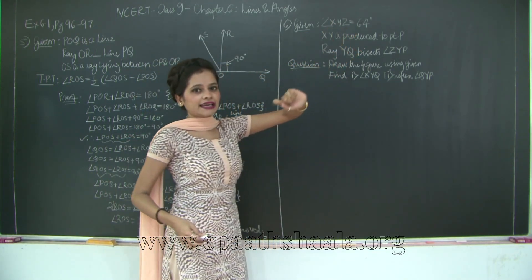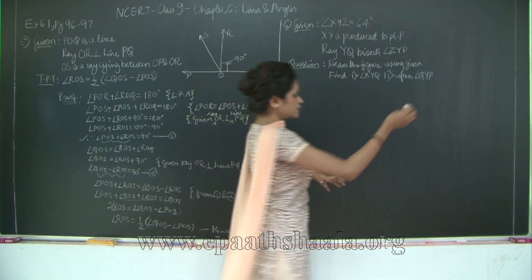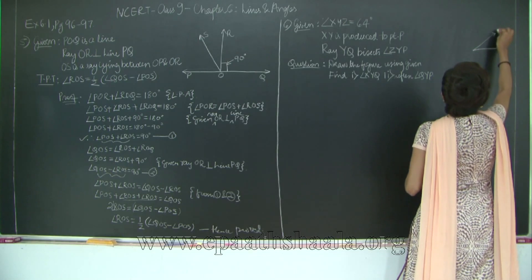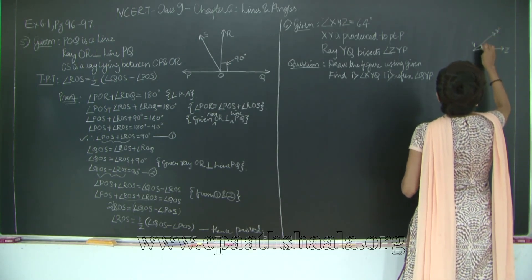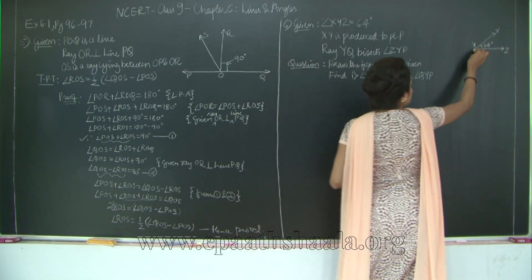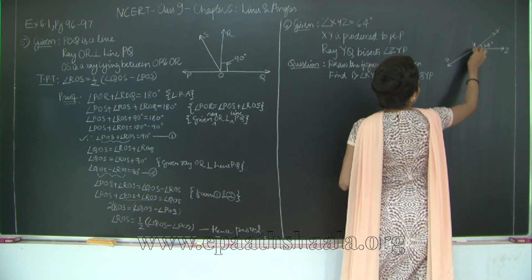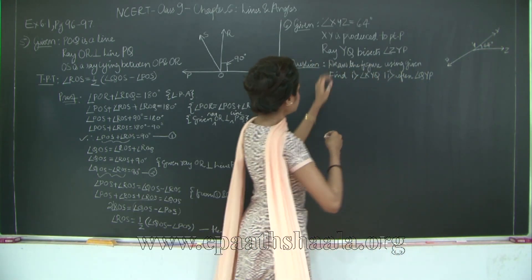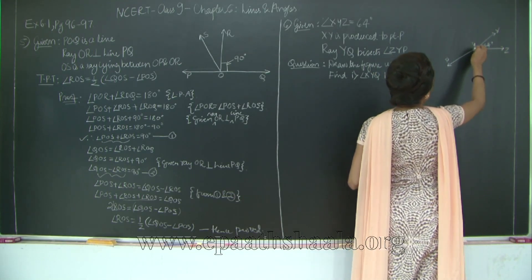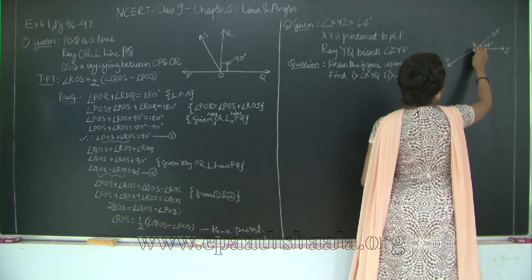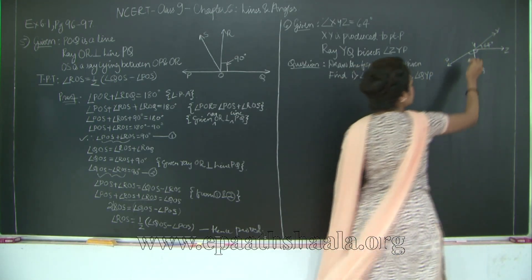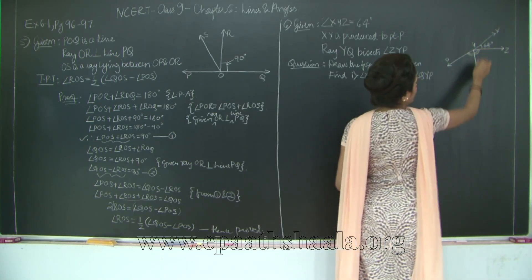First, we take the given data and draw the diagram. Angle XYZ is 64 degrees, which is an acute angle. Then XY is produced to point P, making XYP a straight line. Ray YQ bisects angle ZYP, so it divides ZYP into two equal parts. Therefore angle PYQ equals angle QYZ.